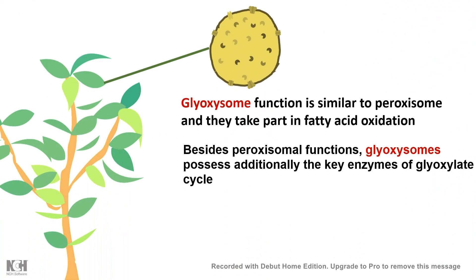Plants do not have peroxisomes, but they have a very similar structure known as the glyoxysome. The glyoxysome functions similarly to the peroxisome and is a hub for fatty acid oxidation in plants. Besides peroxisome-like functions, the glyoxysome is also very important for the glyoxylate cycle in plants, making it a critical organelle for plant physiology.